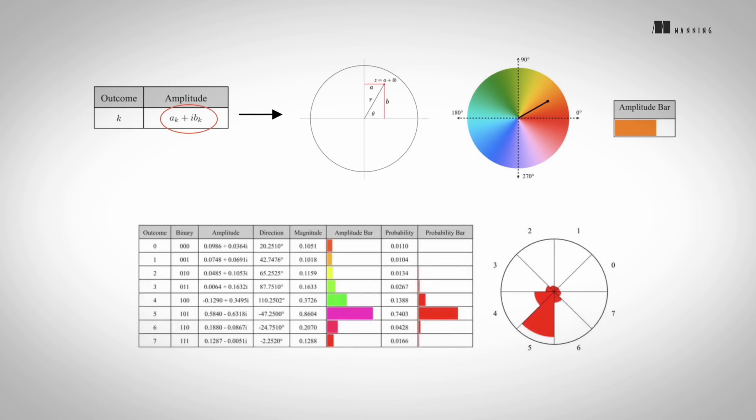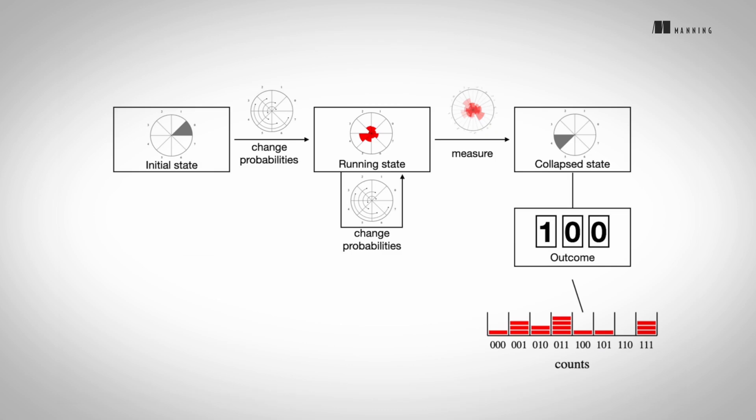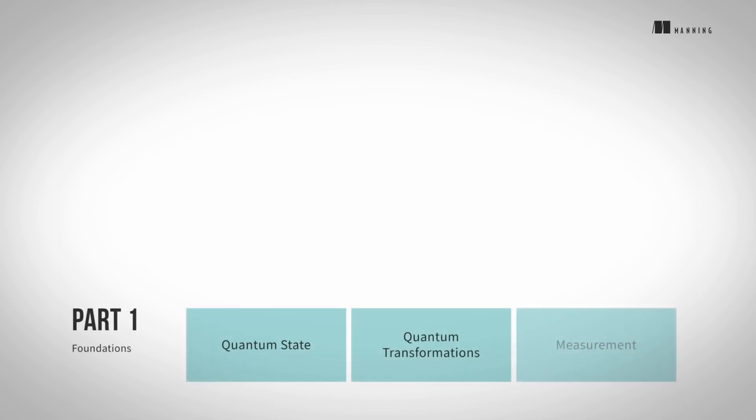We build upon familiar concepts, specifically the butterfly computing pattern used in the Fast Fourier Transform, to explain the fundamental pattern of all quantum transformations in a visual manner. Here is the anatomy of a quantum computation captured using visual components. The book starts with fundamentals: quantum state, transformations, and measurement.